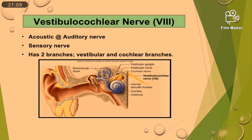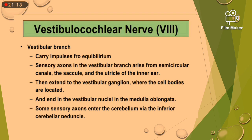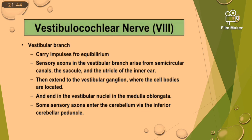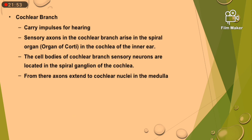The vestibulocochlear or auditory nerve is a sensory nerve with two branches: vestibular and cochlear. The vestibular branch carries impulses for equilibrium. Sensory axons arise from the semicircular canals, saccule and utricle of the inner ear, then extend to the vestibular ganglion where cell bodies are located, and end in the vestibular nuclei in the medulla oblongata. Some sensory axons enter the cerebellum via the inferior cerebellar peduncle. The cochlear branch carries impulses for hearing; sensory axons arise in the spiral organ or organ of Corti in the cochlea of the inner ear. Cell bodies are located in the spiral ganglion of the cochlea.